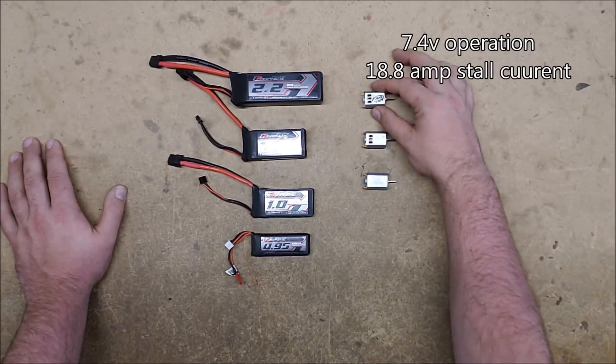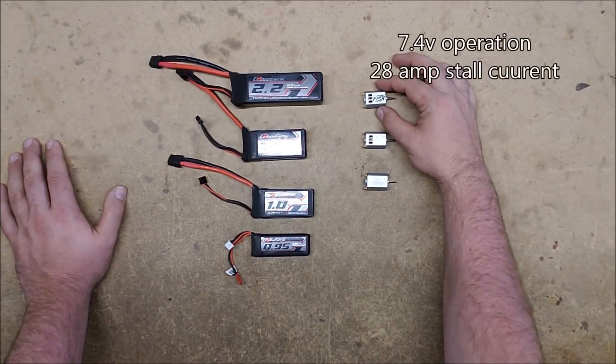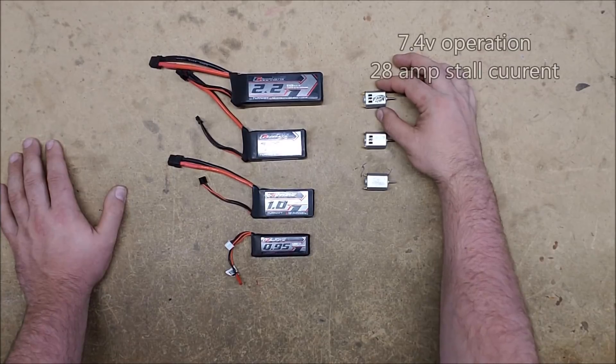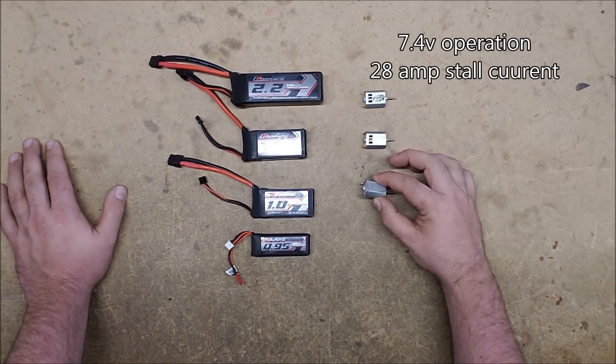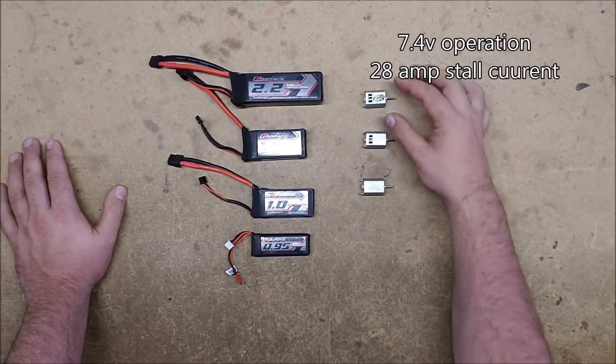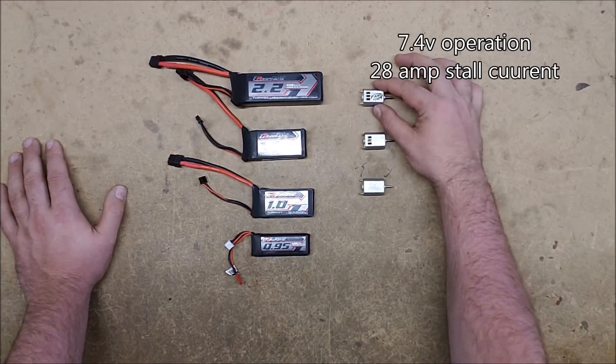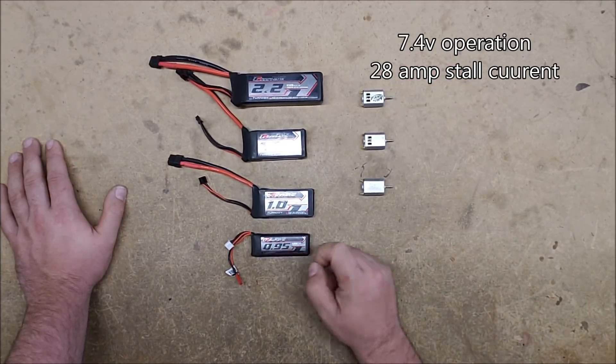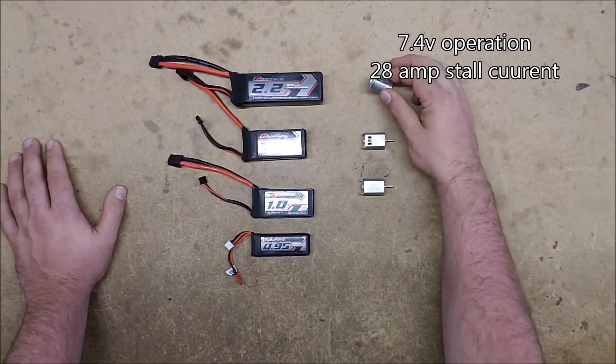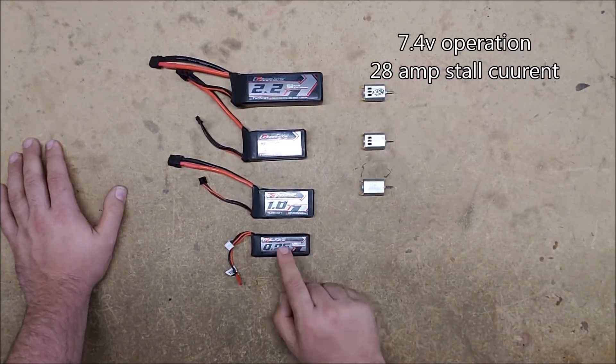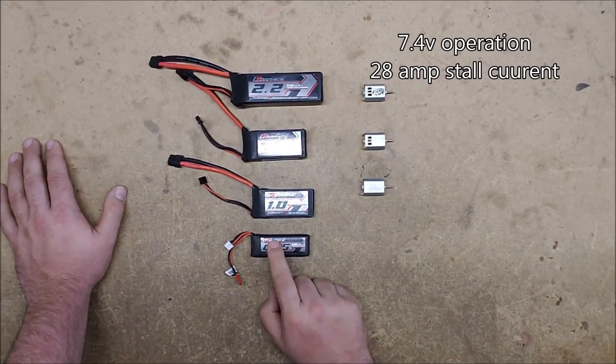Now if you look at something like the Fang revamps, they take 28. So they're four times the current of a Rhino, but still take less voltage. This is still a 2S motor. But you need a lot more.